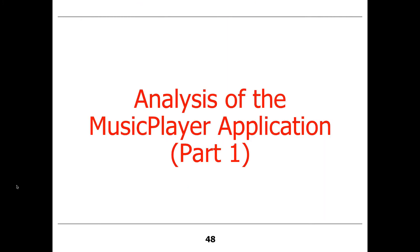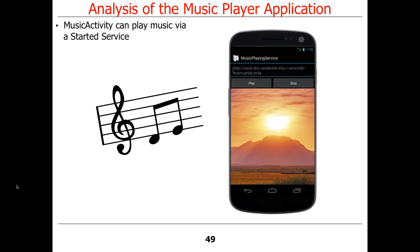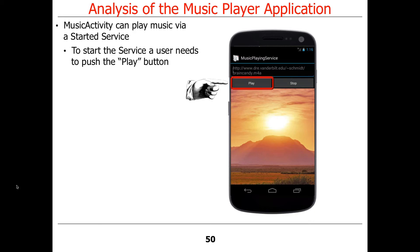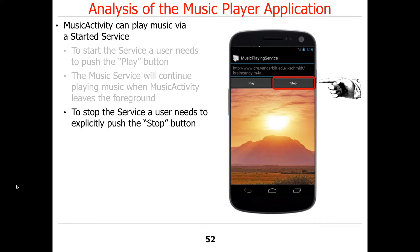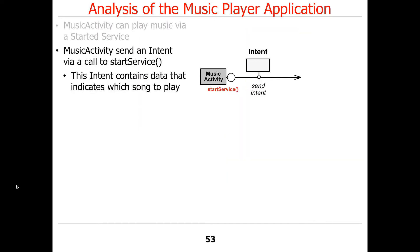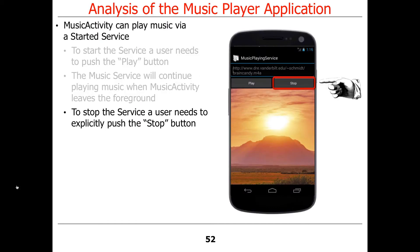Let's talk about the demo application, which will give hints for assignment four — though you're not doing a music player. The music activity can play music via a started service. You give it a URL to play, click play, and it starts playing. That'll keep playing while you do something else. If you navigate back, you can stop it and the music stops.